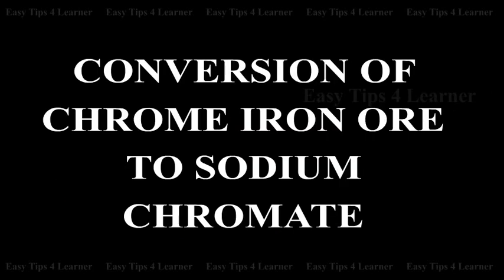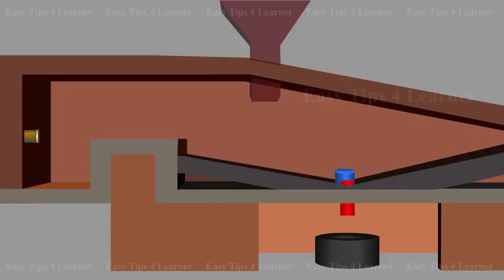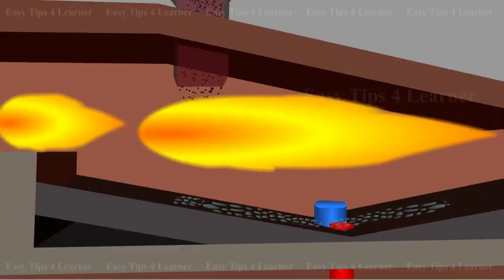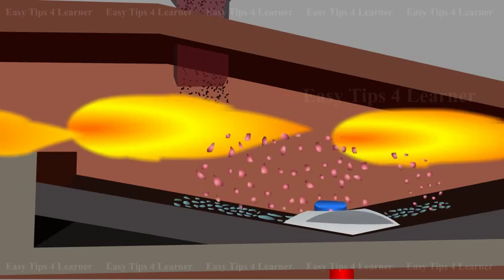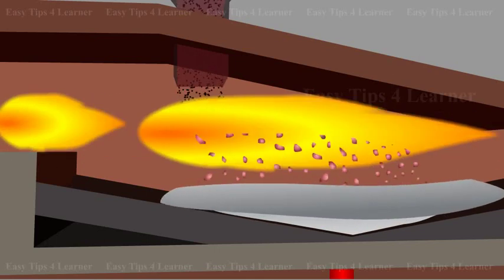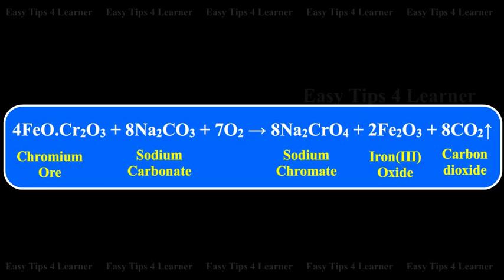Step 1: Conversion of chrome iron ore to sodium chromate. The powdered ore is mixed with Na2CO3 and quicklime, then roasted in a reverberatory furnace with free exposure to air. Chrome iron ore plus sodium carbonate with oxygen gives sodium chromate plus iron(III) oxide plus carbon dioxide.